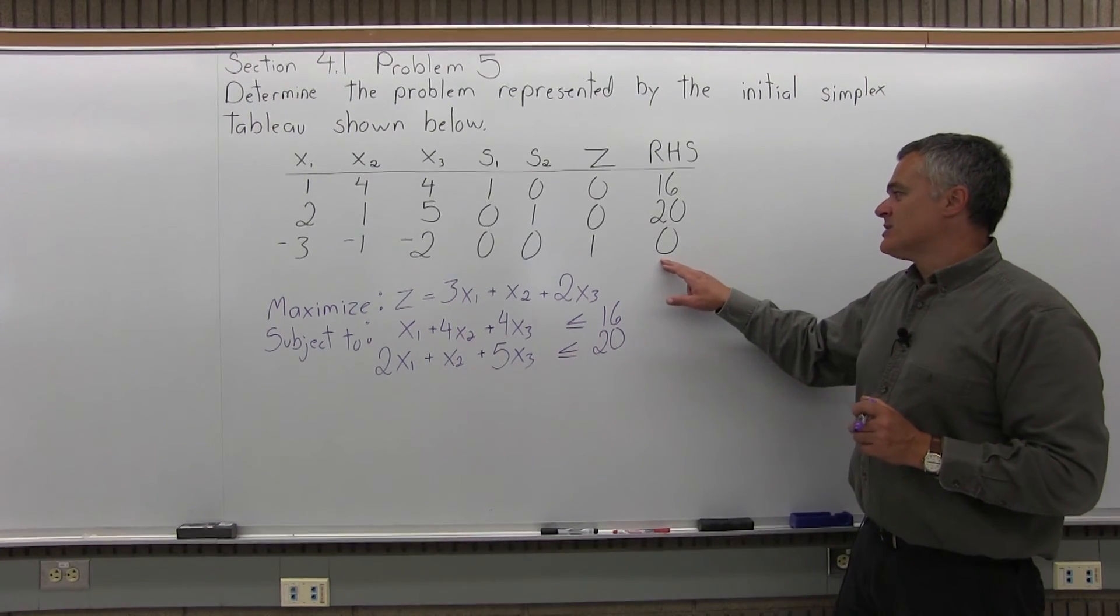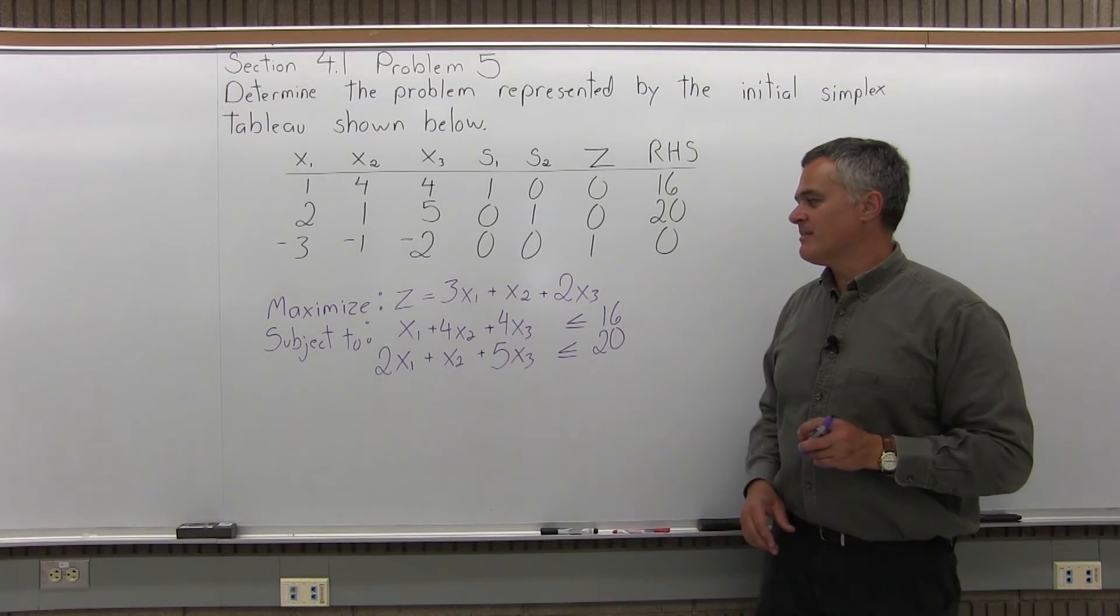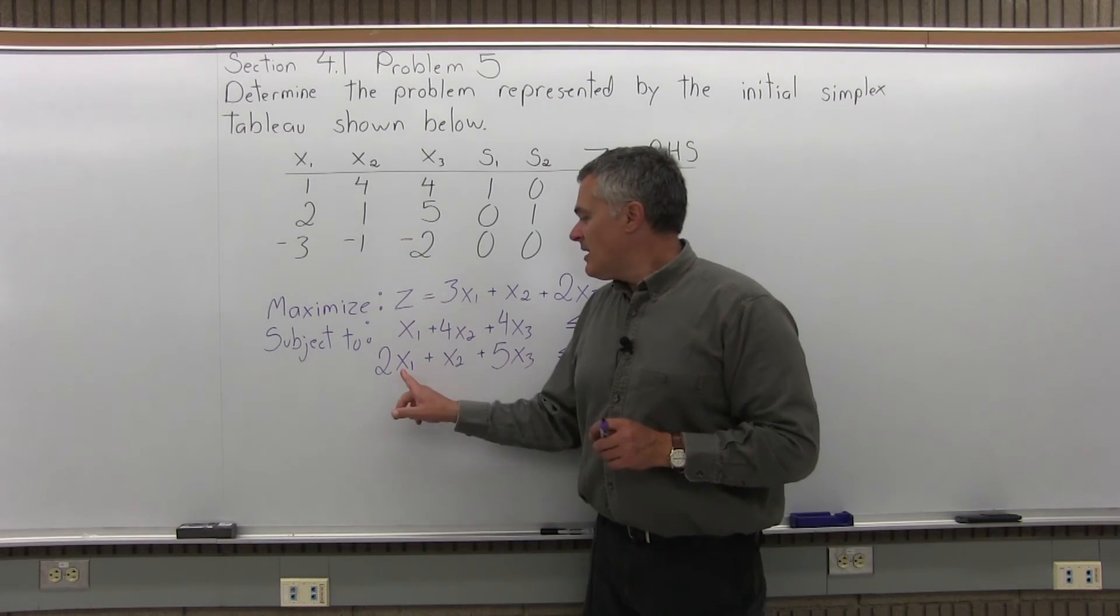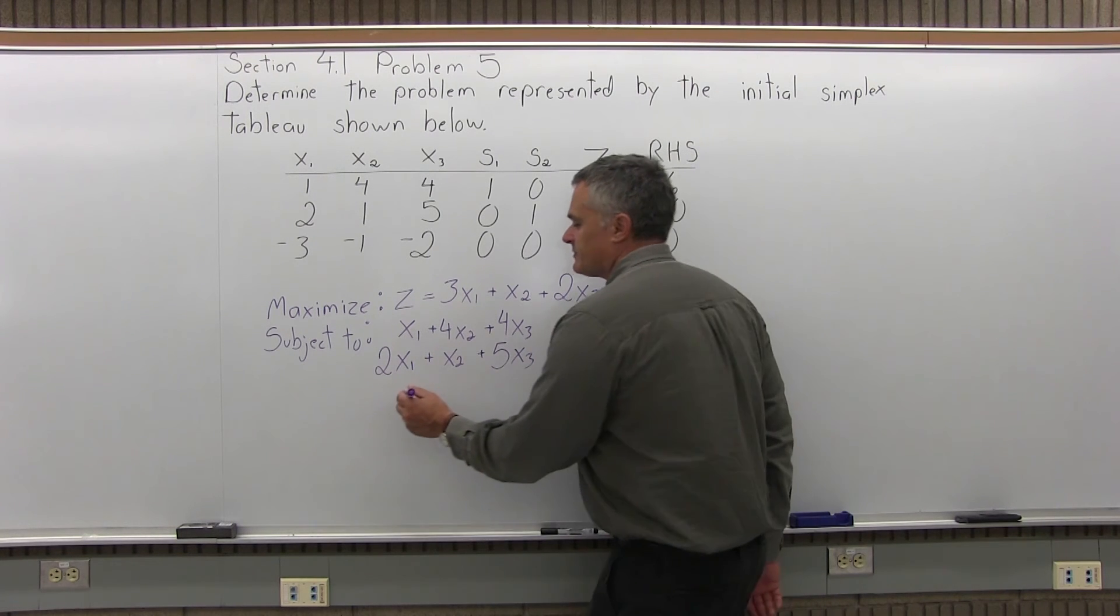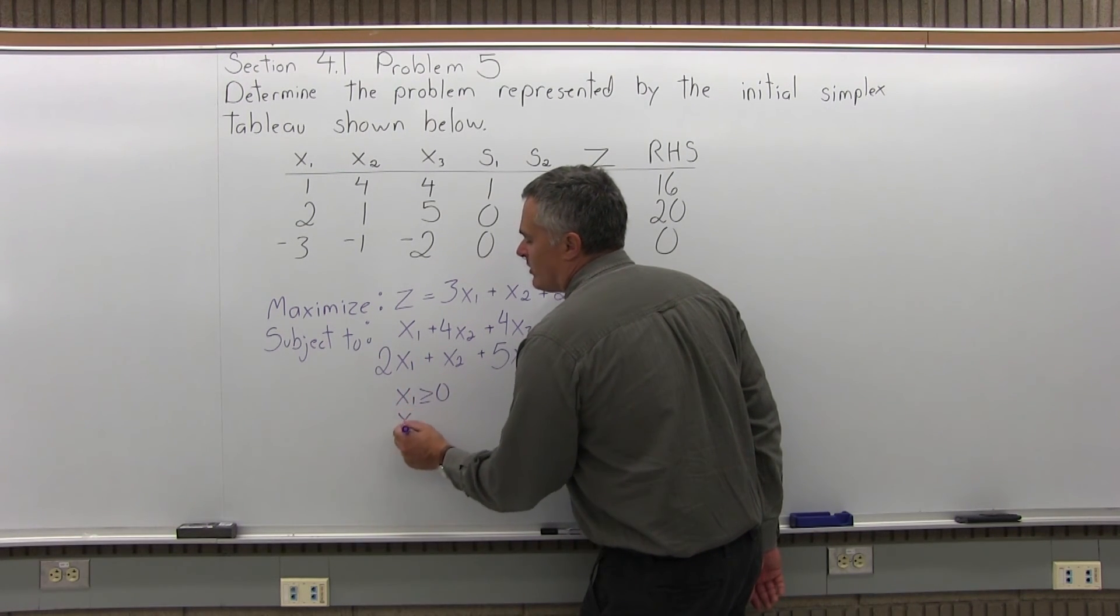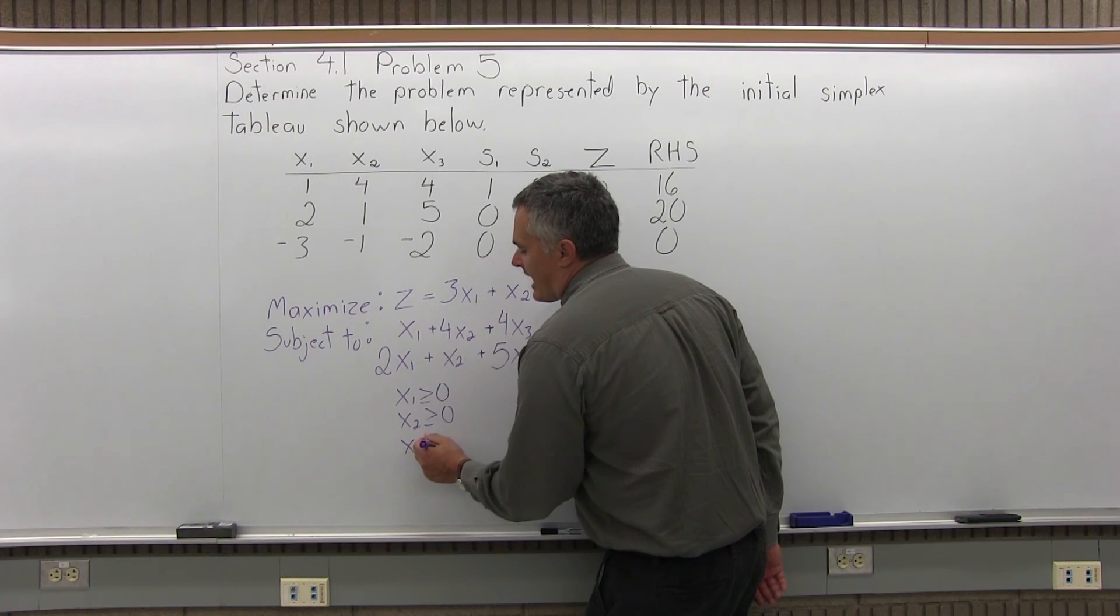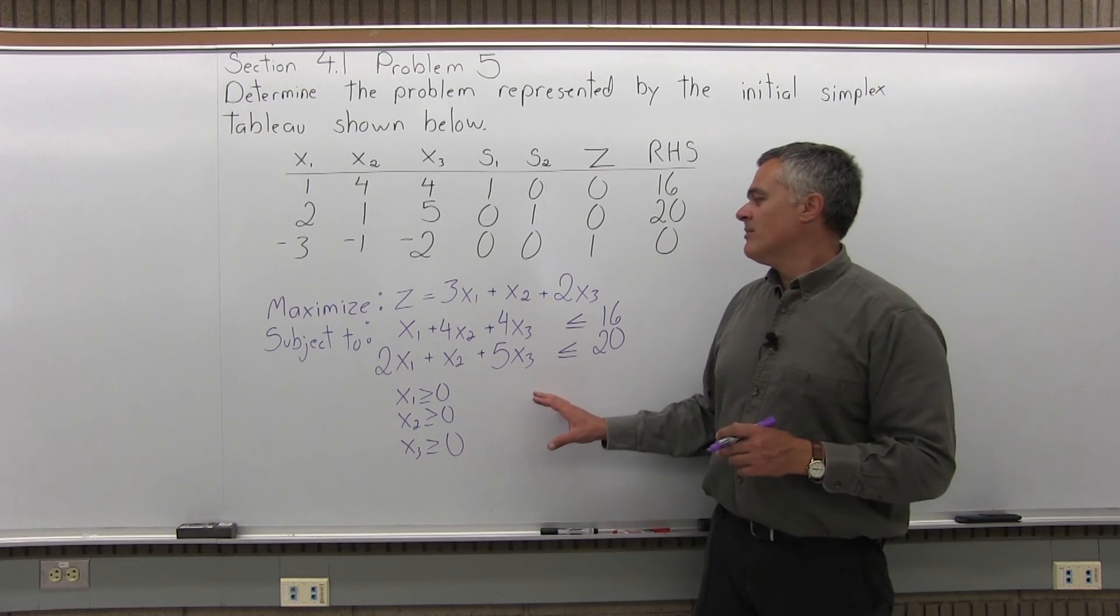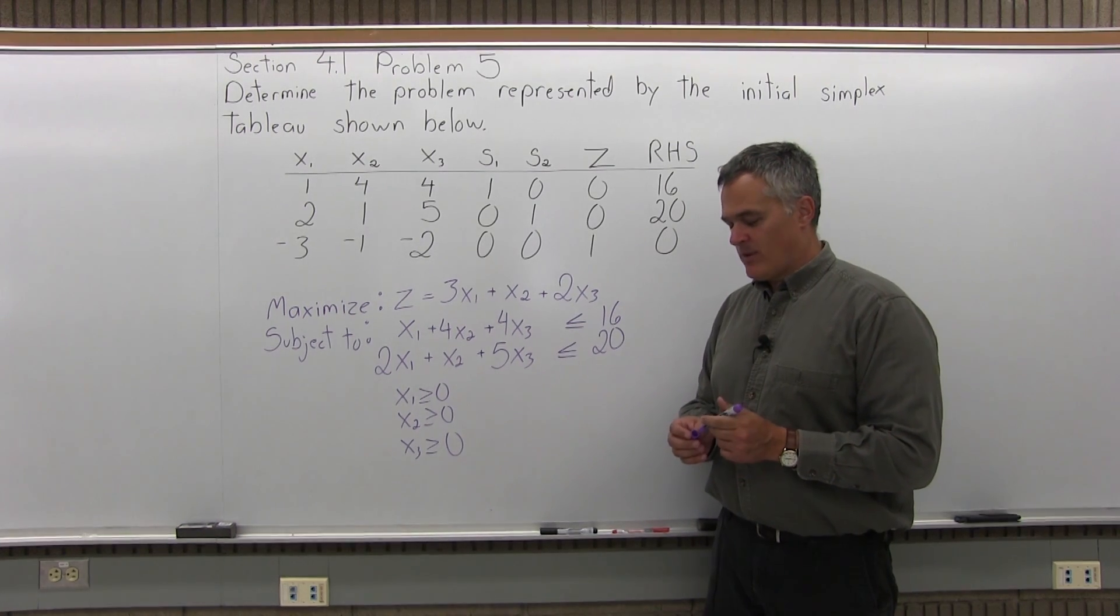The bottom row of that initial simplex tableau, a matrix I've already accounted for as my objective function, what I need to maximize. But I'm not done, and I'm not done because this problem has 3 X variables, and I have to write that each one is greater than or equal to 0. And if I include that, now I'm done. Now what I have written is the problem that was being represented by the initial simplex tableau in the question.